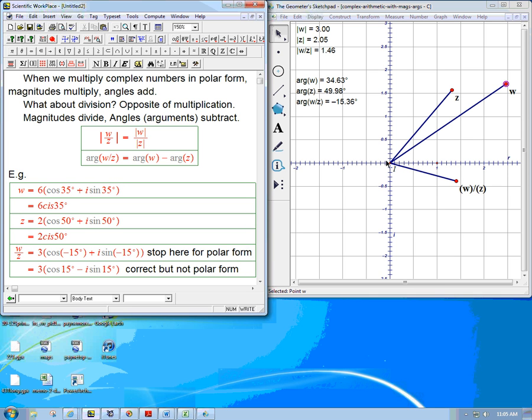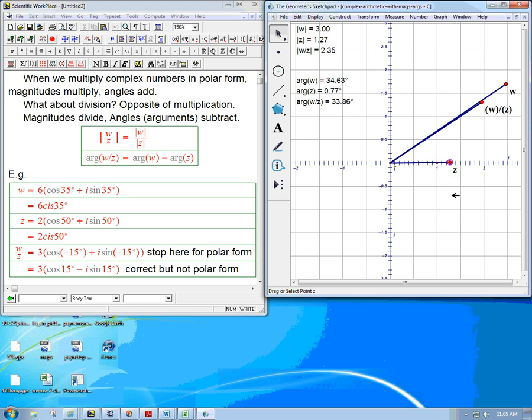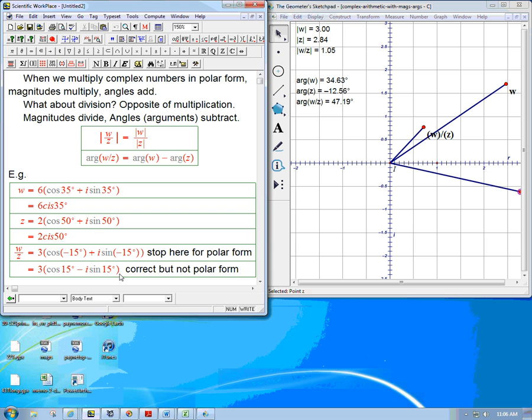Because look what has happened. I've not got a plus there anymore. So if you really want it in polar form, you just stop here. And that says that the answer is going to be something down here, three units out in the minus 15 direction. So three, something like out here basically.